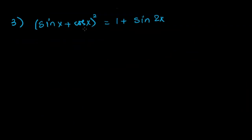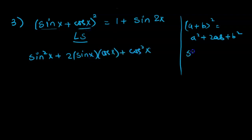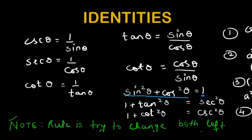Let's do another example for practice: prove that sine x plus cos x whole squared equals 1 plus sine 2x. Simplifying the left side — this is a perfect square, and everything is already in sine and cosine form, so we apply the factoring rule. A plus B whole squared equals A squared plus 2AB plus B squared, so we get sine squared x plus 2 sine x cos x plus cos squared x.